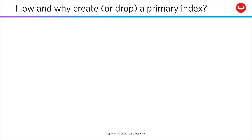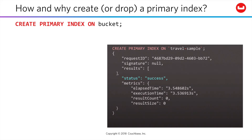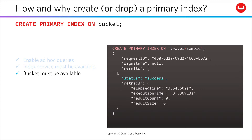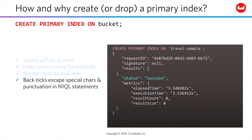Due to our memory-first architecture, N1QL relies on indexes for all data access. You cannot run a N1QL query without at least a primary index in place for a bucket to support a full bucket scan where necessary. So to perform ad hoc queries during development, you'll need to create a primary index for your bucket. You can do so using this syntax — just create a primary index on a target bucket. This allows queries to be developed and run based on any value in any document, provided the index service and the bucket are available. If any bucket or field name contains special characters, just use backticks to escape that term as you see on the slide.